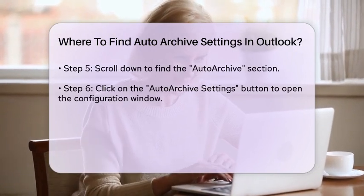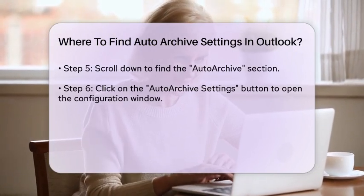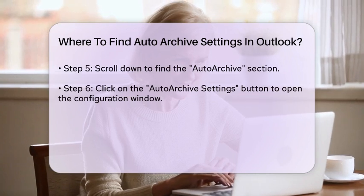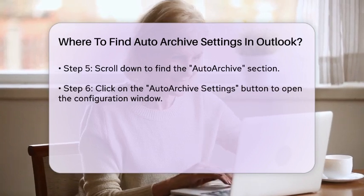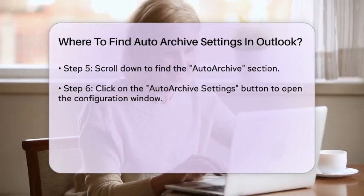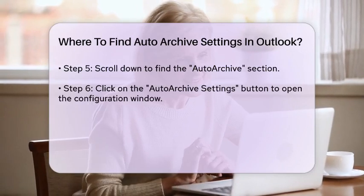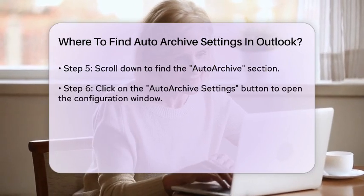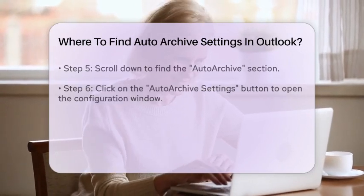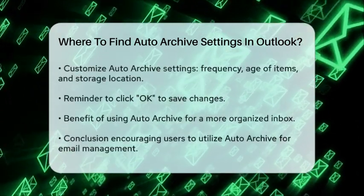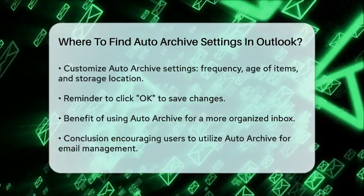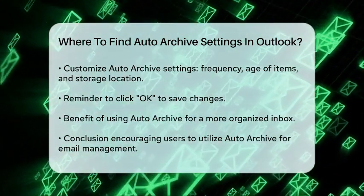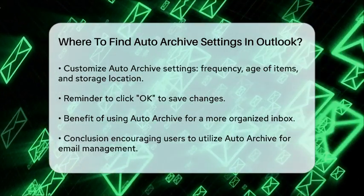In the advanced settings, scroll down until you see the auto archive section. Click on the auto archive settings button to open the configuration window. This is where you can customize how often auto archive runs, how old items must be before they are archived, and where the archived items will be stored.